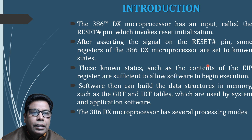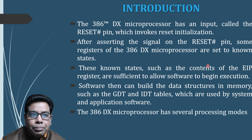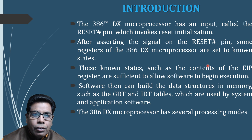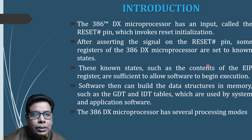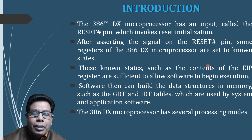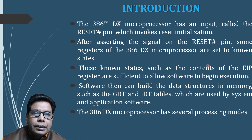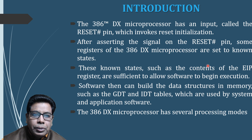The 80386 DX Processor has an input called the Reset hash pin, which involves reset initialization. After we make this pin low — because it is an active low pin — some registers of the 80386 DX microprocessor are set to a known state, particularly CR0, the DX register, and EAX register. These known states, such as the contents of the EIP register, are sufficient to allow software to begin execution.